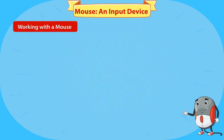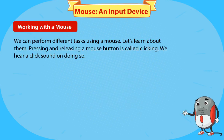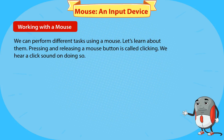We can perform different tasks using a mouse. Pressing and releasing a mouse button is called clicking. We hear a click sound on doing so.